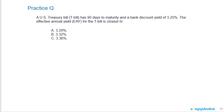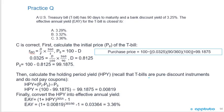On the last slide for this LOS, here's another practice problem. A U.S. Treasury bill has 90 days to maturity and a bank discount yield of 3.25%. The effective annual yield for the T-bill is closest to: A, 3.29%; B, 3.32%; or C, 3.36%? This is a little tricky — I'd say it's on the harder side because you have to go through three steps to solve it.